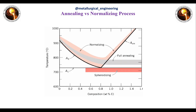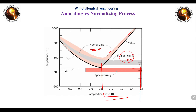The normalizing temperature is generally higher than the full annealing temperature. For hypereutectoid steel specifically, full annealing temperature is between Acm and Ac1, while the normalizing temperature is higher than Acm. From a microstructure perspective, annealing produces a coarser microstructure while normalizing produces a finer microstructure. In terms of strength, normalizing provides higher strength compared to annealing, while for ductility, annealing provides much better ductility compared to normalizing.